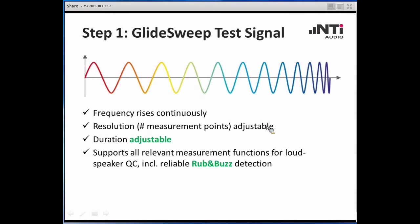Now let's spend some words about the test signal. Nowadays the de facto standard in test signals for loudspeakers is the GlideSweep, for different reasons. It is created by a sine wave that continuously changes its frequency from low to high. The advantage is that you cover all frequencies in the range without missing any, as would happen with a StepSweep. The resolution of measurements — the number of measurement points — is adjustable, as is the duration, and that is a huge advantage.